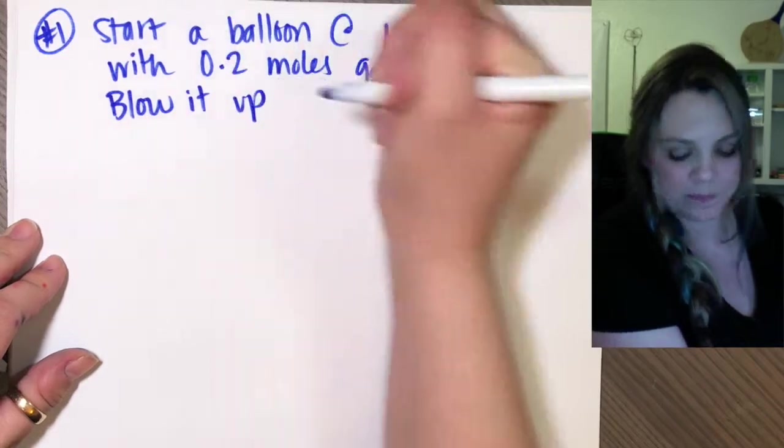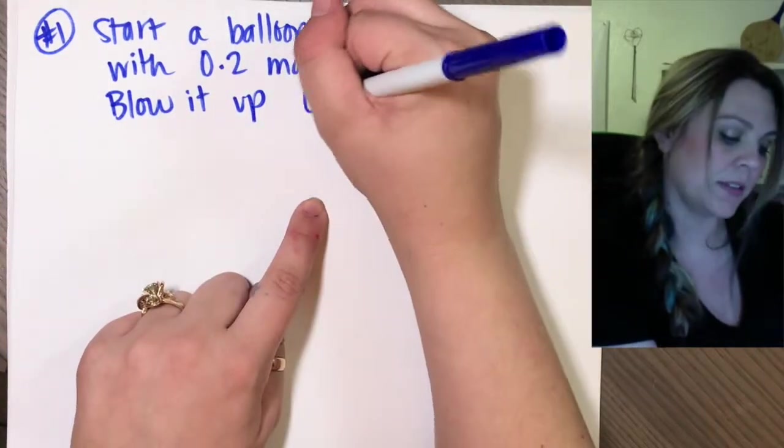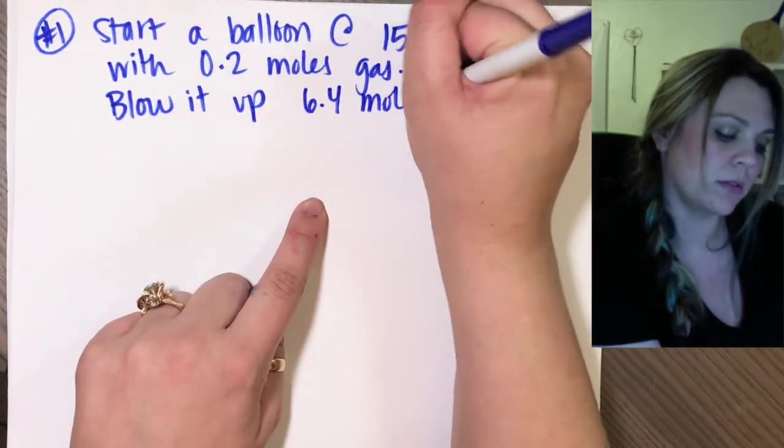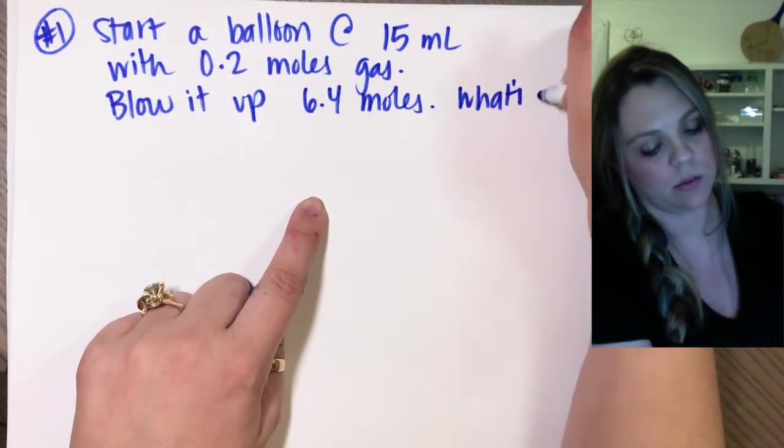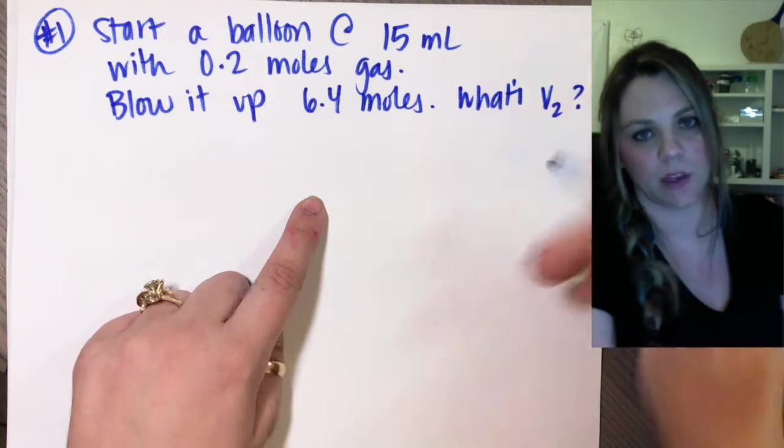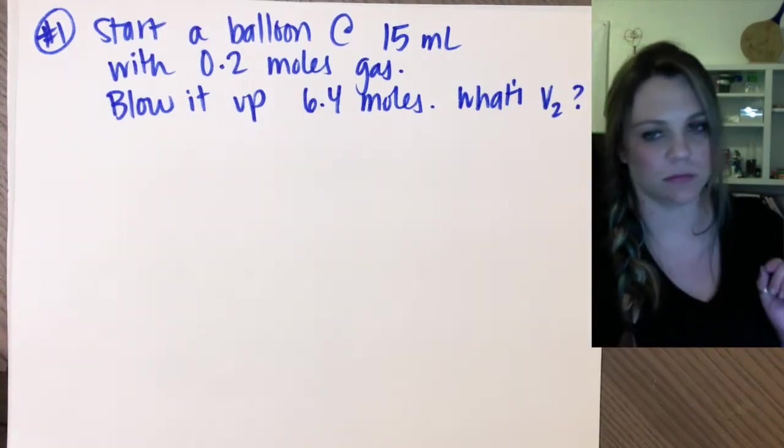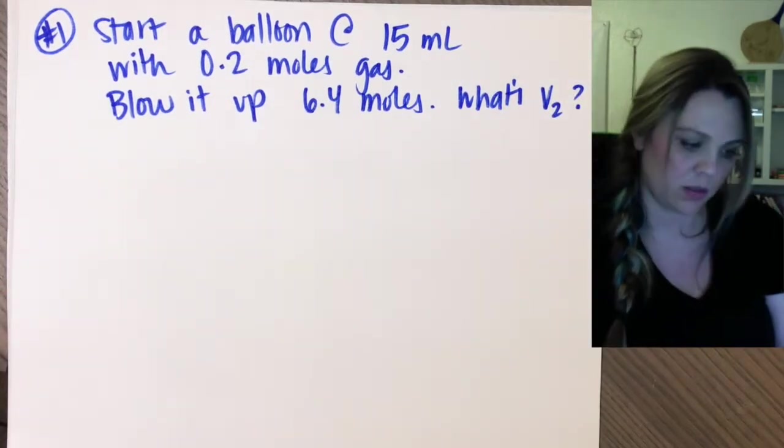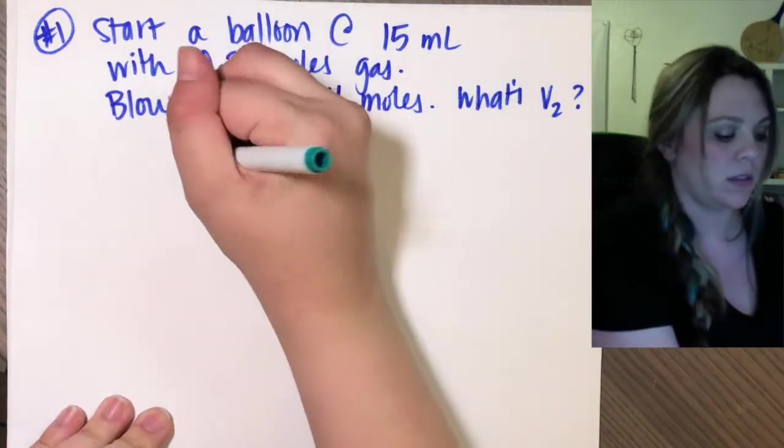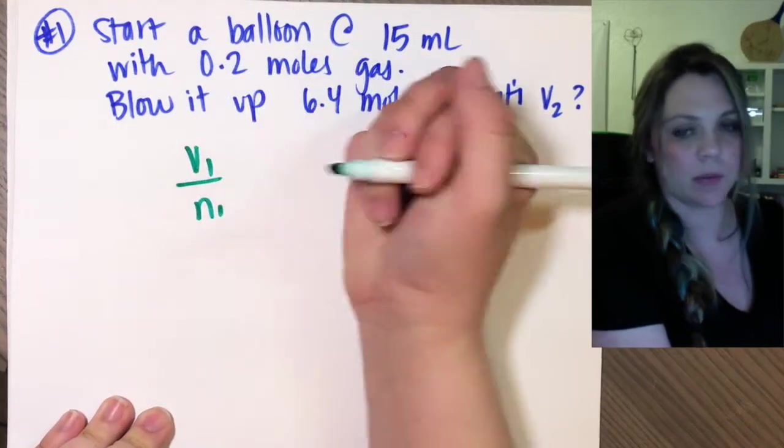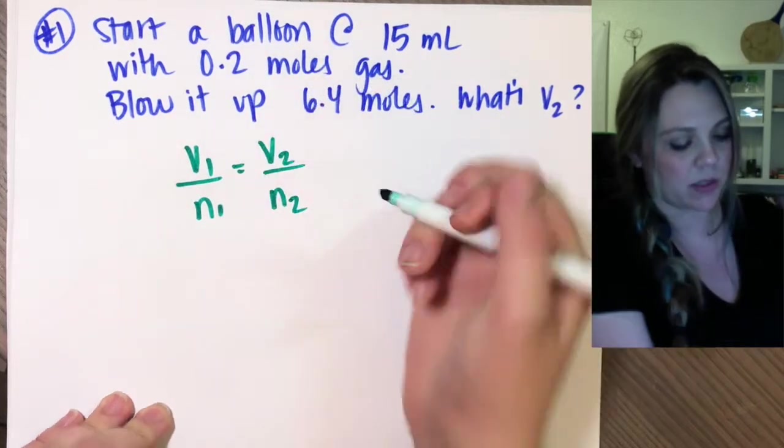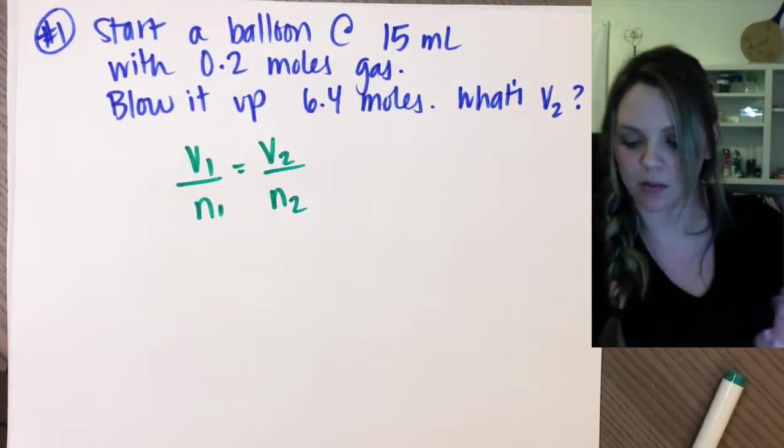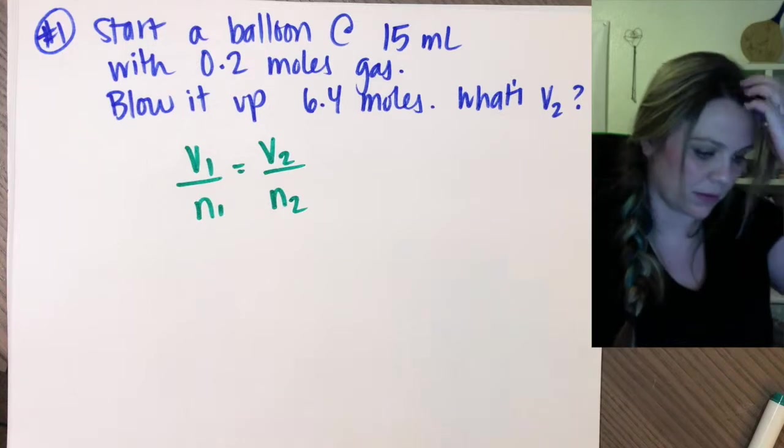You blow it up to have 6.4 moles of gas. What's the volume of my blown up balloon? Easy. This is volume one over number of moles one equals volume two over number of moles two. And I just plug in my stuff.